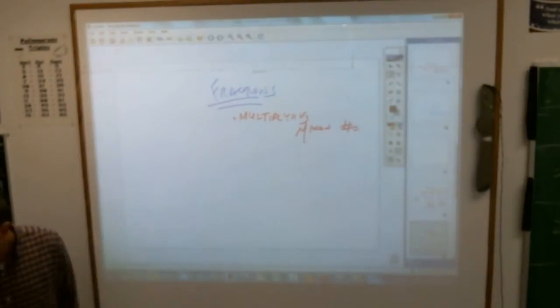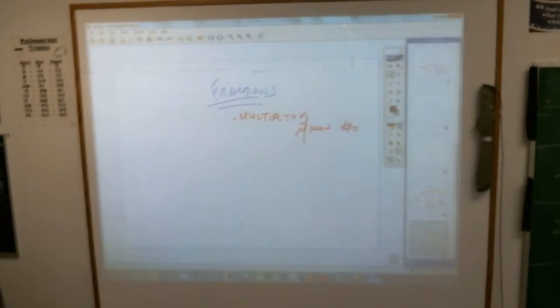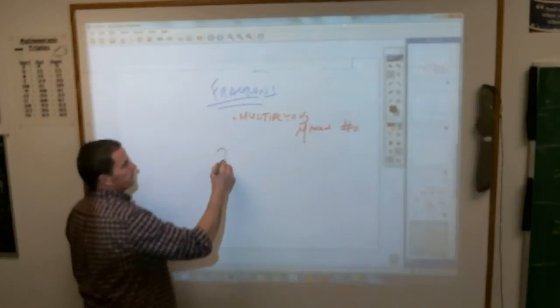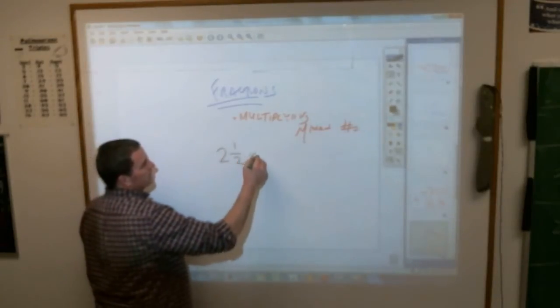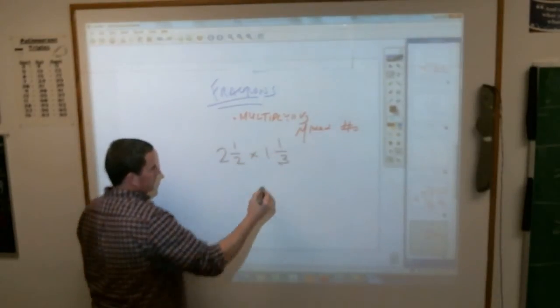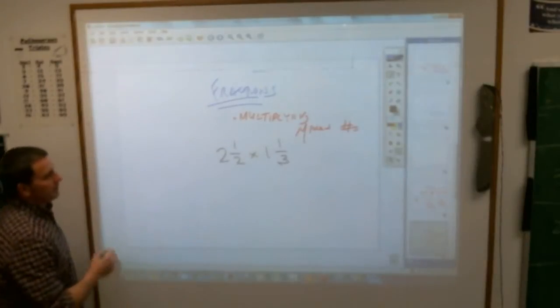For example, if you have 2 and 1/2 times 1 and 1/3. First of all, if you multiply, you don't have to line up.